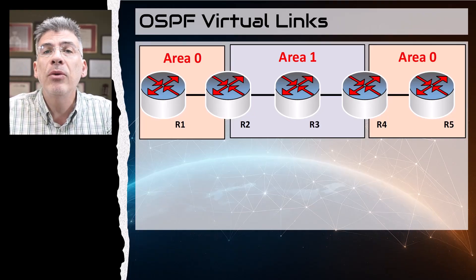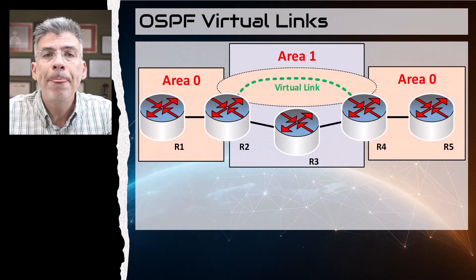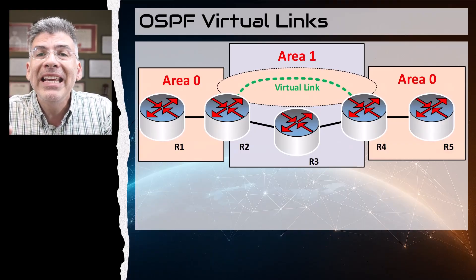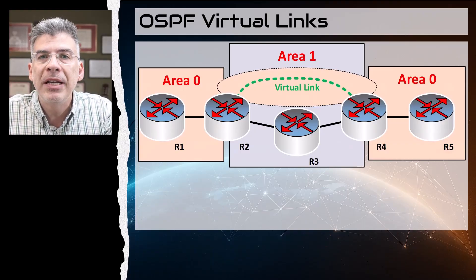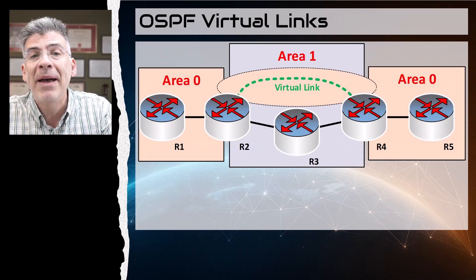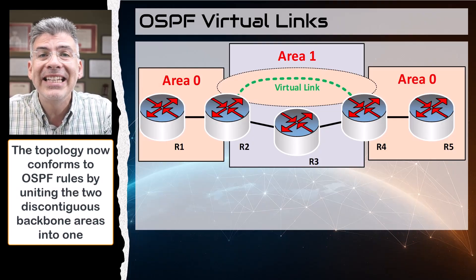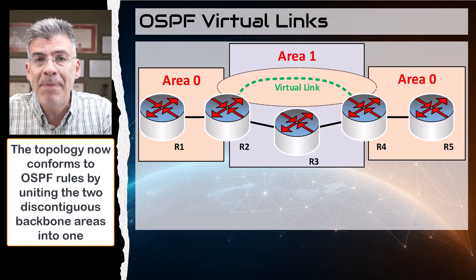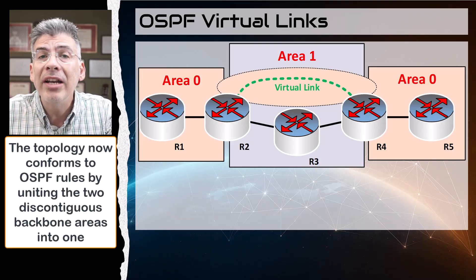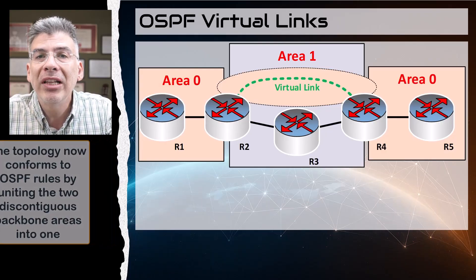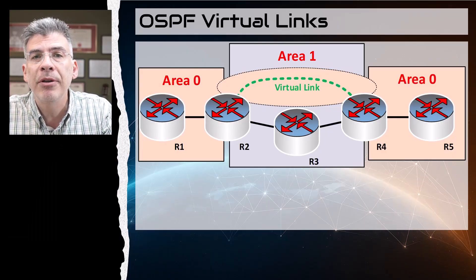Regardless of the reasons behind such a topology, to resolve the situation immediately, we can create a virtual link to unite the area zero backbones into a single backbone. This resolves the problem by uniting the discontiguous backbone area back into one single area, thus allowing the relevant LSAs to be distributed throughout the whole area zero backbone.